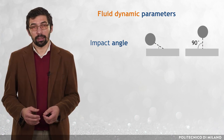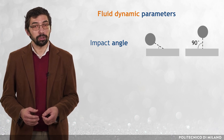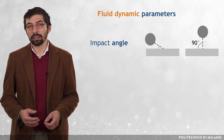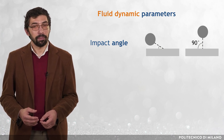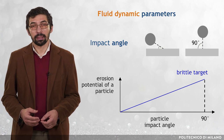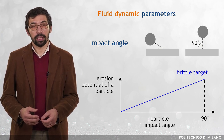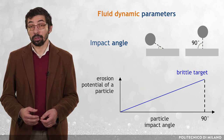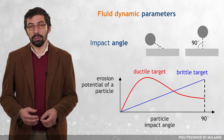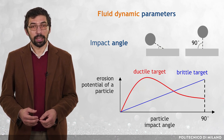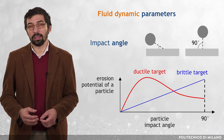The effect of the impact angle — which is equal to 90 degrees for normal impingement and approaches 0 for sliding contact — is strongly dependent upon the mechanical behaviour of the target material. In the case of a brittle target, the erosion potential of a particle monotonically increases with the impact angle, reaching the maximum value for normal impingement. In the case of a target material with ductile behaviour, the impact angle function is not monotonic, and the maximum erosion occurs for inclined impingement.